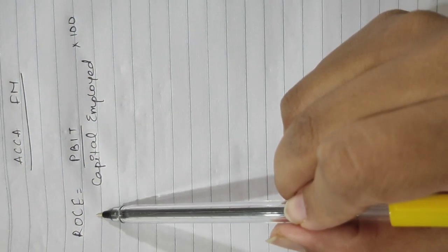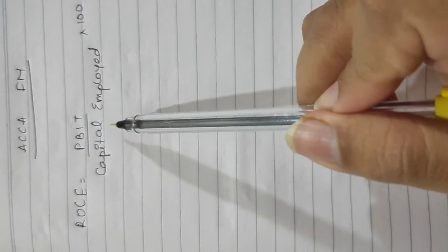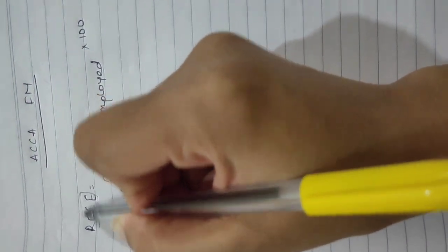As we saw how to calculate ROC, the formula is: ROC equals profit before interest and tax upon capital employed, multiplied by 100. In ACCA FM, we calculate ROC for particular investments. In the last class we saw how to calculate ROC for a whole company; in this lecture we'll see how to calculate ROC to decide whether we should invest in a particular project or not.